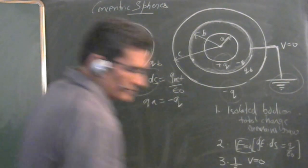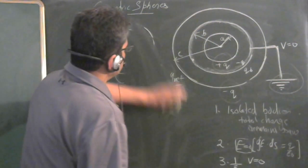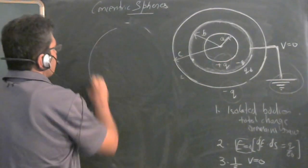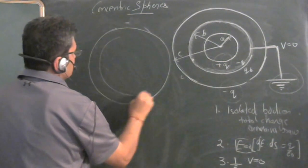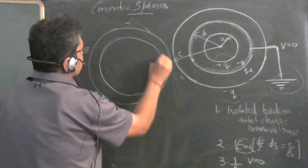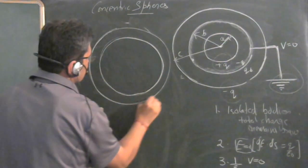Now take this sphere C and apply the same principle. For example, the sphere C and I am drawing magnified view so that we can draw the Gaussian surface. So it's a thin sphere, but thin will also have some thickness.